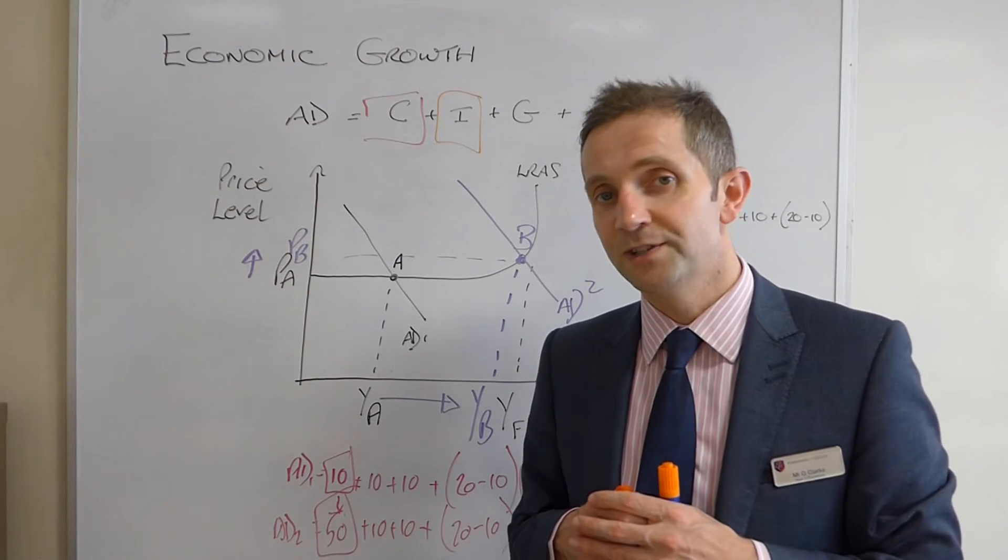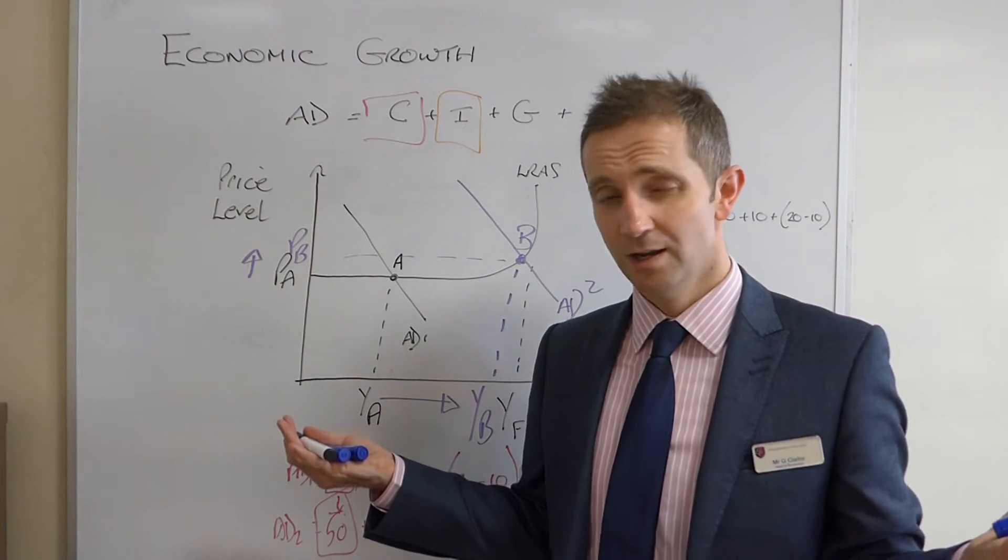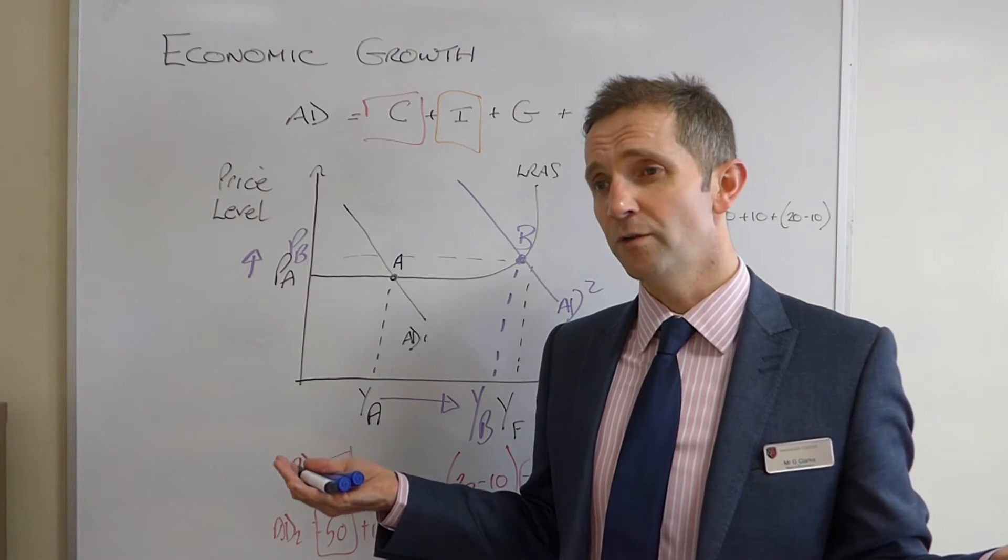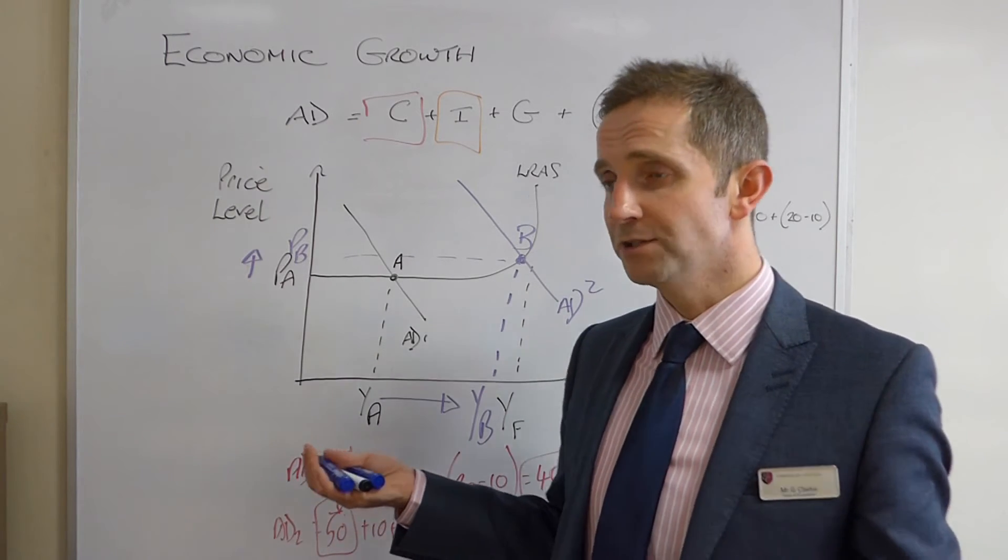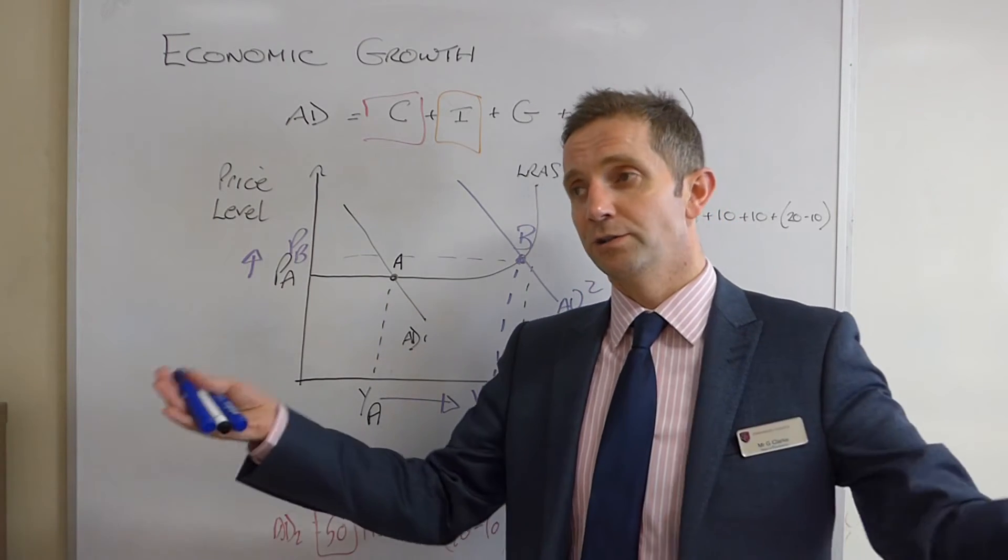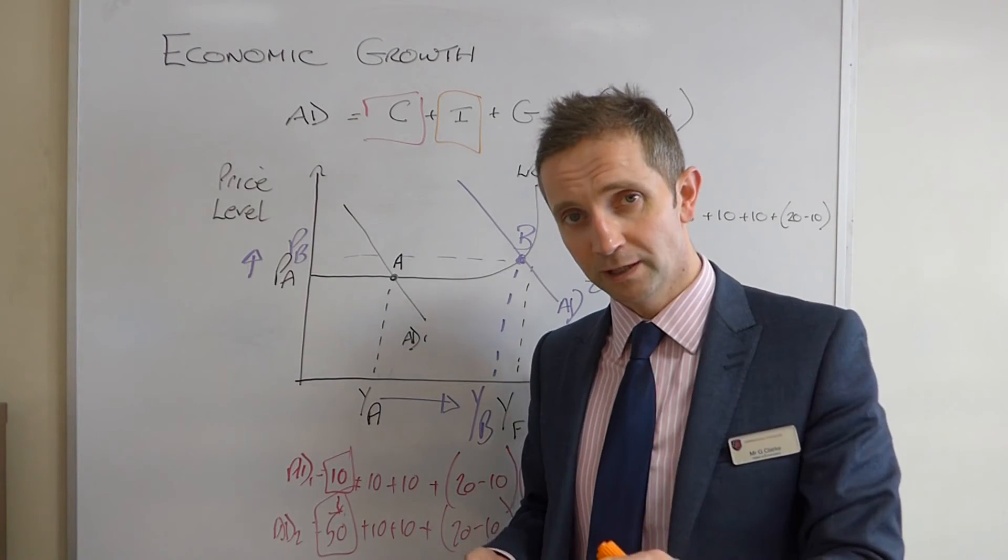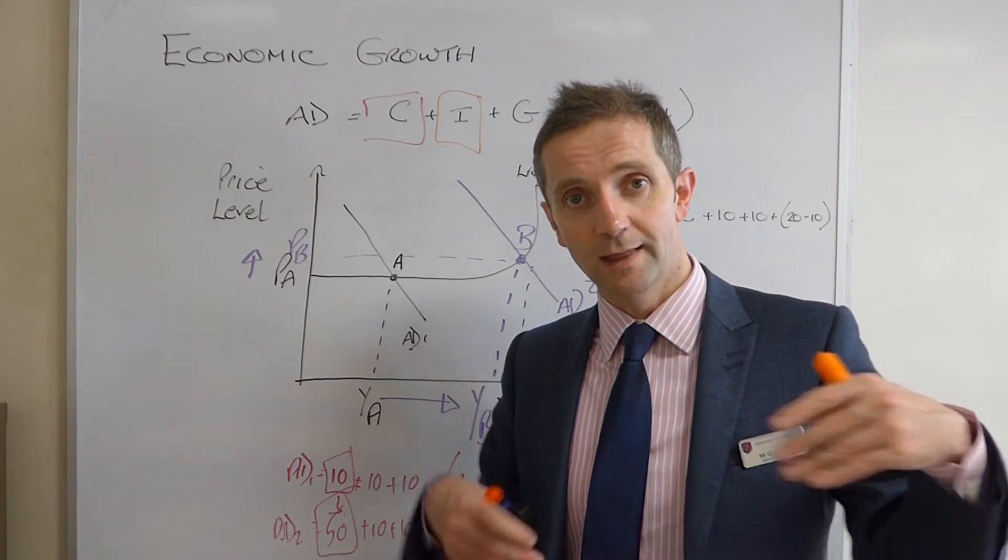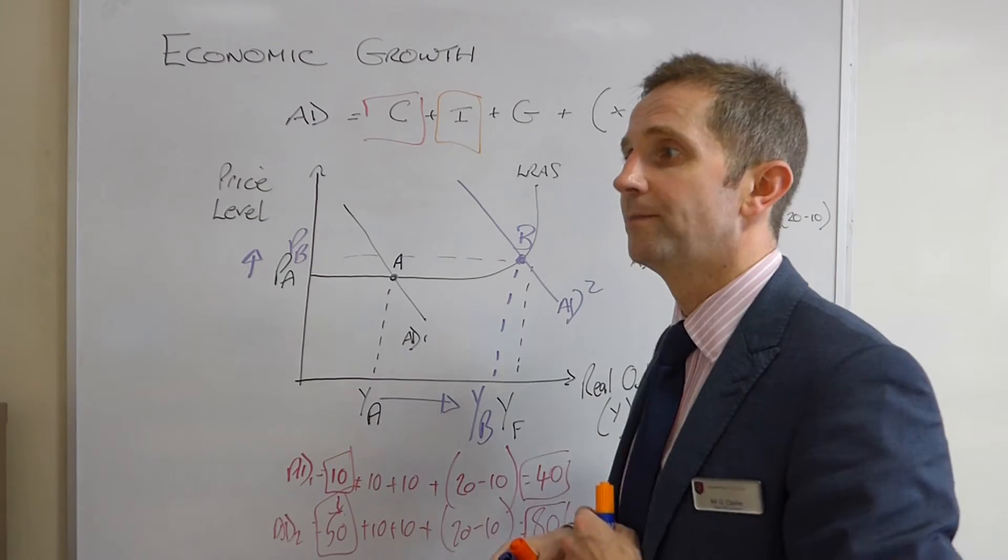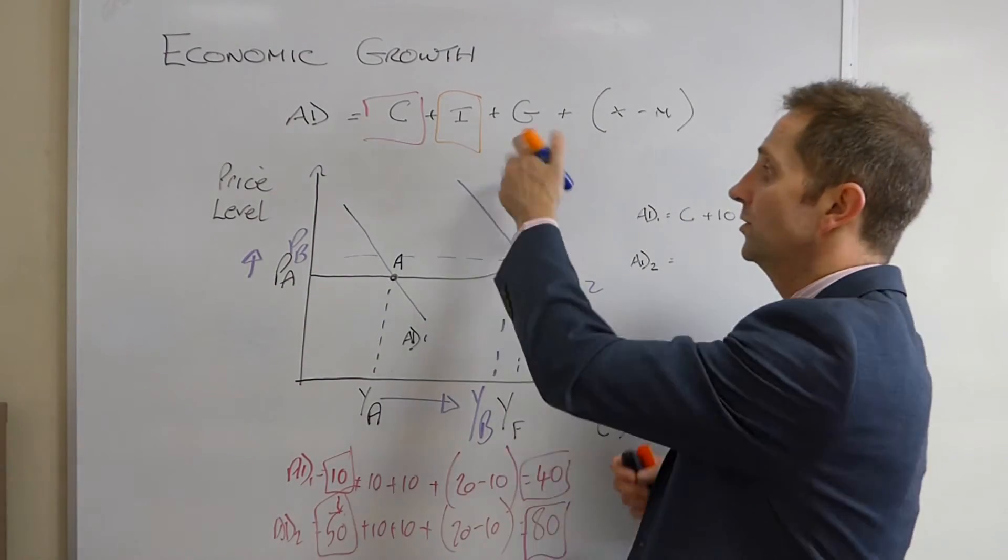The government, or the central bank, could reduce borrowing costs again, because firms, not all firms have, not all firms are like Apple, with billions of dollars lying around. They have to borrow to buy large pieces of equipment and machinery. So, they could reduce borrowing costs. That then incentivizes investment, and so, as a consequence, investment might go up.